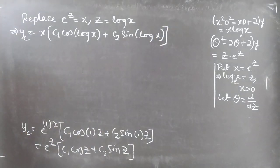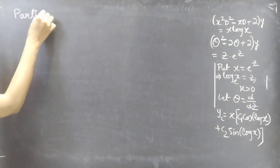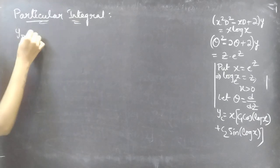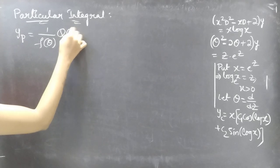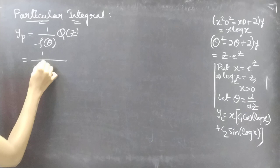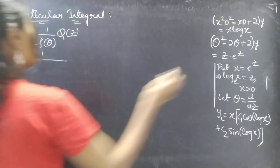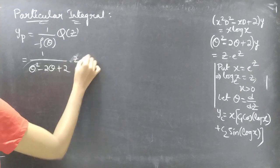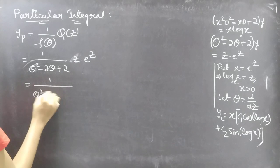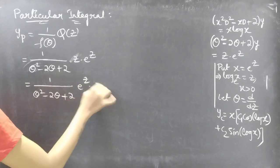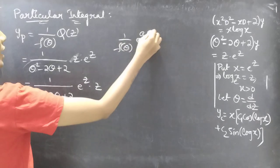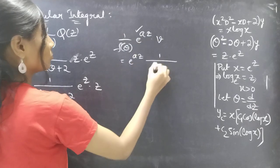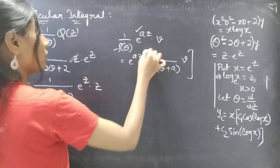Now let's find the particular integral yp. We use yp equals 1 over f(theta) applied to Q(z), where f(theta) equals theta squared minus 2 theta plus 2, and Q(z) equals z times e to the z. We write yp as 1 over (theta squared minus 2 theta plus 2) applied to e to the z times z. This is of the form 1 over f(theta) applied to e to the az times v, so we shift e to the az left by replacing theta with theta plus a.